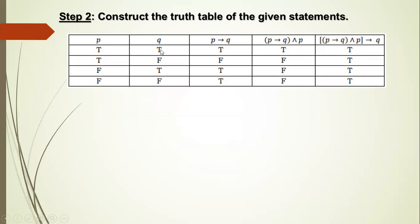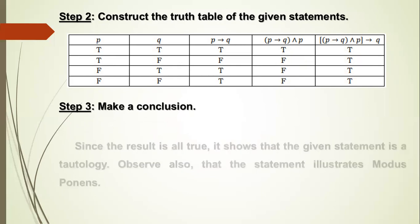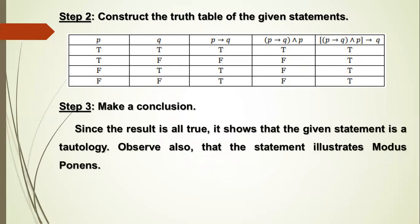Filling in the truth table: when P is True and Q is True, the result is True. When P is True and Q is False, the result is True. When P is False and Q is True, the result is True. When P is False and Q is False, the result is True. Step 3: Make a conclusion. Since the result is all true, it shows that the given statement is a tautology.